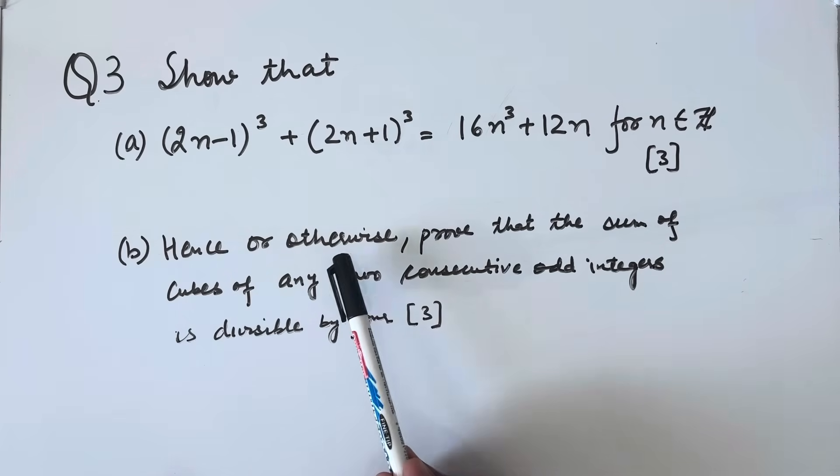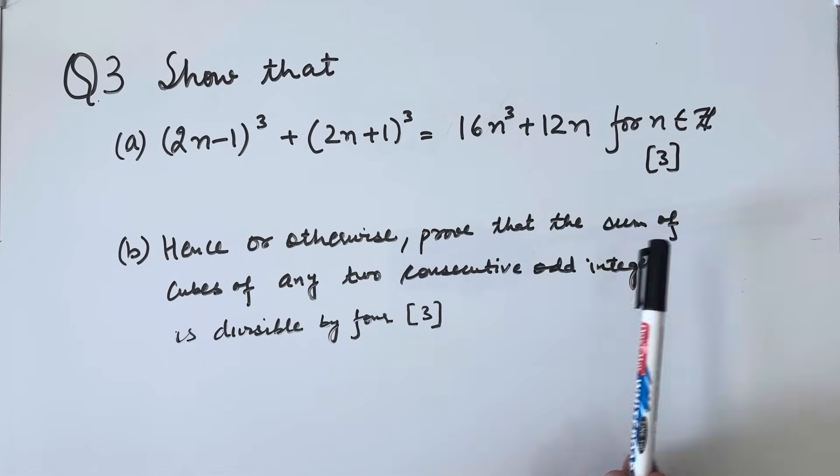Part b, hence or otherwise prove that the sum of cube of any two consecutive odd integers is divisible by 4. This is also 3 marks.